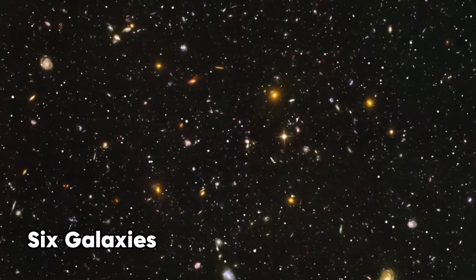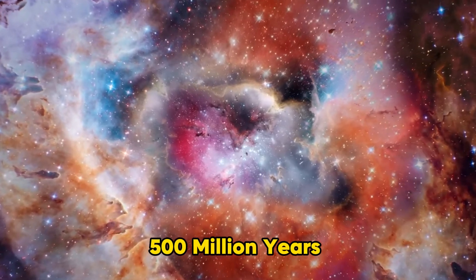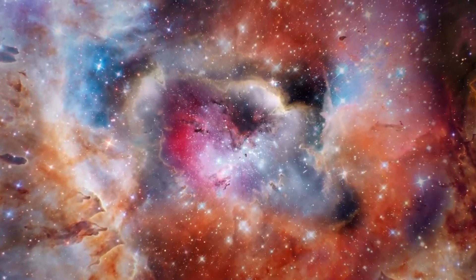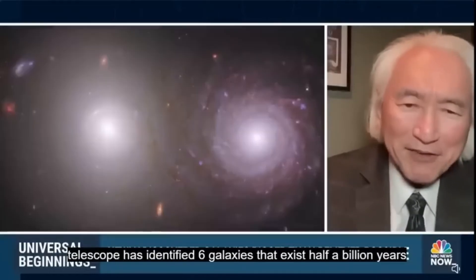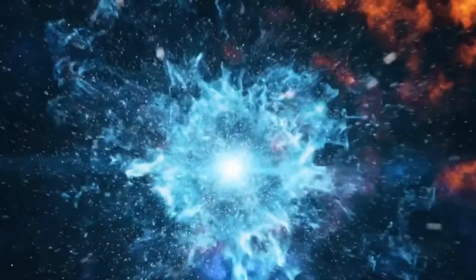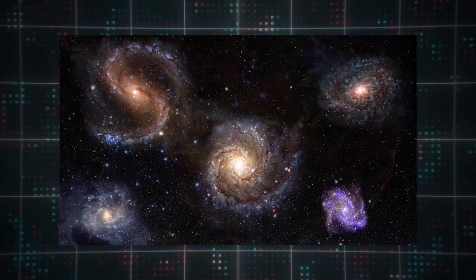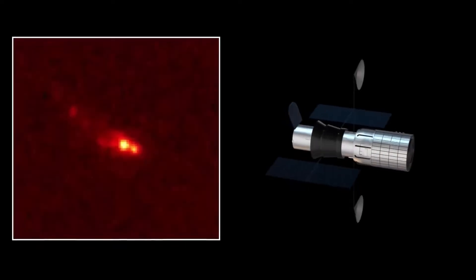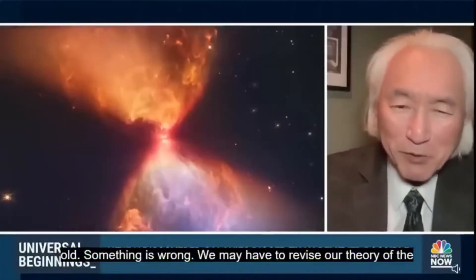However, six galaxies as large as the Milky Way, discovered by the James Webb Telescope, existed within 500 million years of the Big Bang. They are as large as the Milky Way itself. That is not acceptable. Primordial galaxies younger than 500 million years shouldn't exist if they are larger than our own Milky Way. We have a problem. We might need to rethink how the cosmos came to be. Something is wrong. We may have to revise our theory of the creation of the universe.